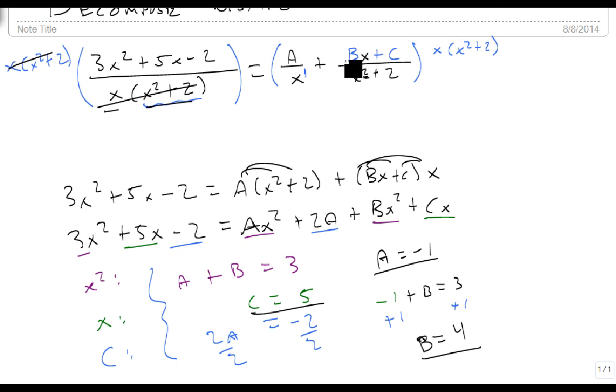We'll come back up here and feed the pieces in with what we found. So we get minus 1 over x plus 4x plus 5 over x squared plus 2. And we have decomposed our original problem.